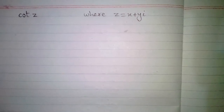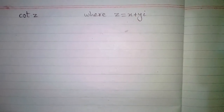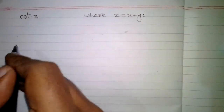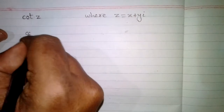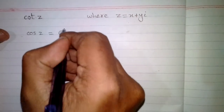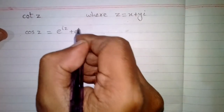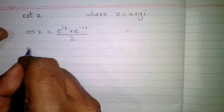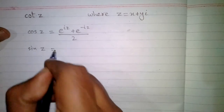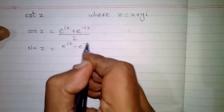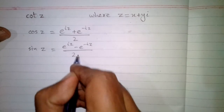In this video we will find the value of cotangent of a complex number z, where z is equal to x plus y iota. First of all, we know that cosine of z is equal to e to the power iota z plus e to the power minus iota z, upon 2, and sine of z is equal to e to the power iota z minus e to the power minus iota z, upon 2 iota.